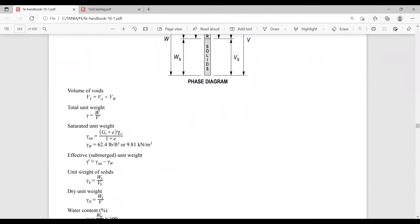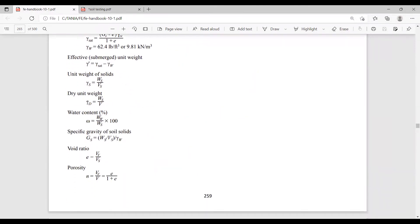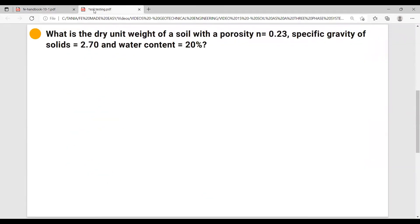We need the dry unit weight, here it is. So gamma dry equals to weight of solids over the volume. Let's write this down.